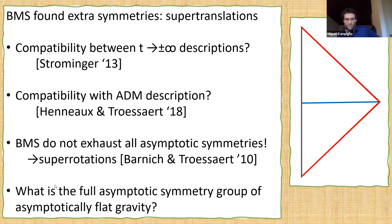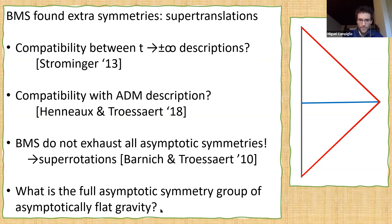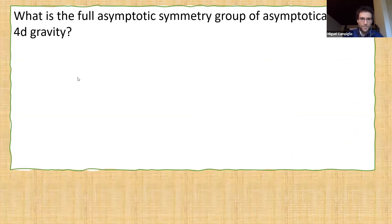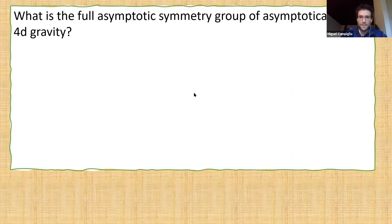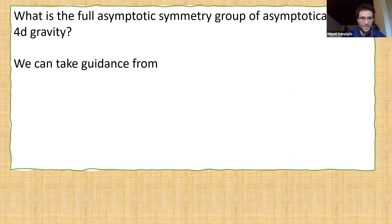More generally, if BMS does not exhaust all symmetries, we can ask: what is the full asymptotic symmetry group of gravity in asymptotically flat spacetime? This question has arisen in the workshop in the context of celestial amplitudes. To determine how much we can extend the symmetry group, we can take guidance from soft theorems — which will be my main guidance in this talk — but also from simpler theories such as QED, gravity in dimensions other than four, and the celestial CFT perspective.